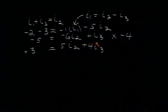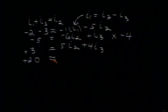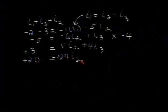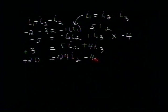We multiply the whole equation by minus 4. Minus 4 times minus 5 is plus 20. Minus 4 times minus 6 is plus 24. And that is I2. And minus 4 times 1I3 is minus 4I3.